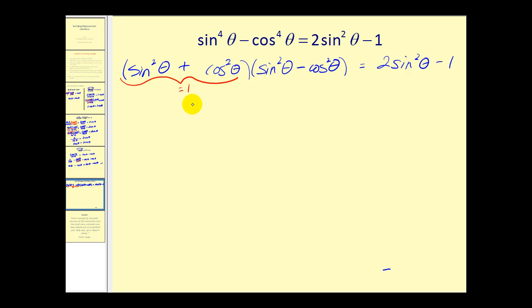Notice the right side is in terms of sine squareds and constants. Well, here we have a sine squared. We can do another Pythagorean substitution using cosine squared theta. Remember that cosine squared theta is equal to one minus sine squared theta. Since we're subtracting cosine squared theta, we need to subtract the quantity one minus sine squared theta.